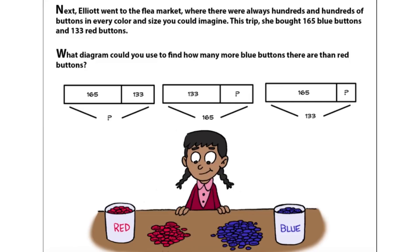Next, Elliott went to the flea market where there were always hundreds and hundreds of buttons in every color and size you could imagine. This trip, she bought 165 blue buttons and 133 red buttons. What diagram could you use to find how many more blue buttons there are than red buttons?